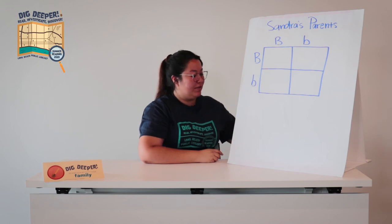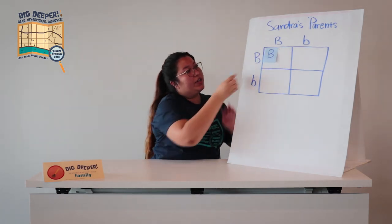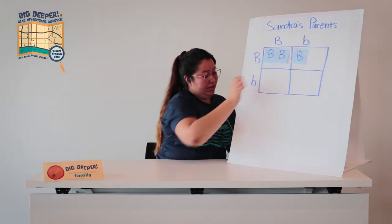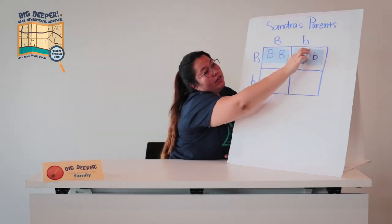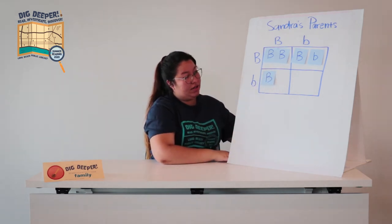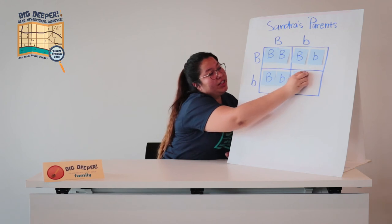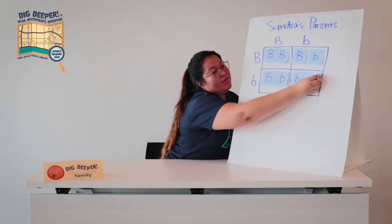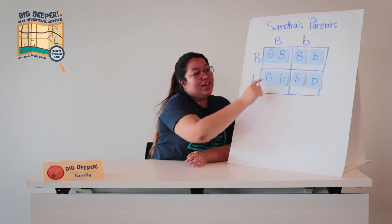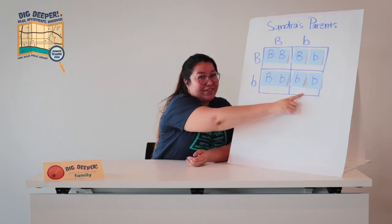So now let's pair the alleles. We'll have big B and big B, big B and little b, little b and big B, and little b and little b. It looks like Sandra had a 75% chance of having brown eyes thanks to that big B allele, but she ended up with green eyes — she only had a 25% chance of that happening.